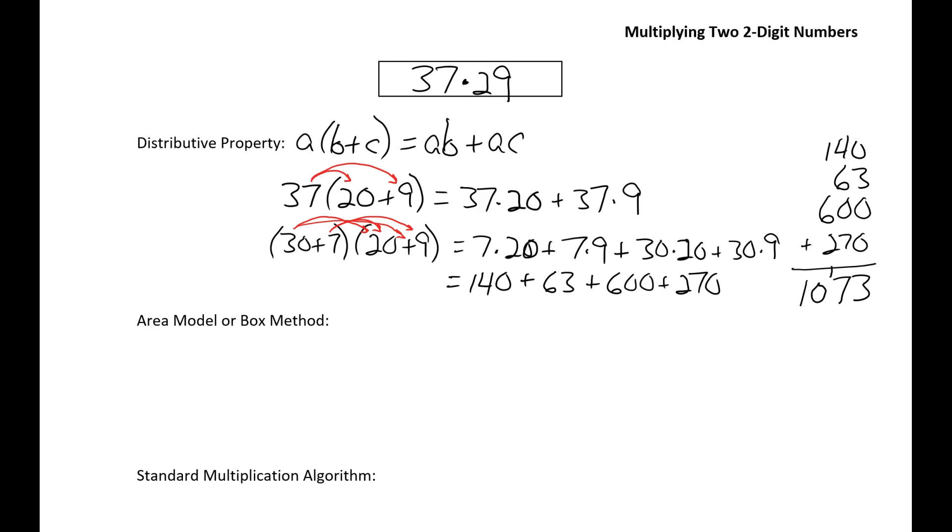So you may have also seen this type of problem written this way, with a box divided into four parts. And the 20 plus 9 on the top. And the 30 plus 7 written along the side. And then a multiplication symbol here in the corner. And then you multiply each pair of numbers, and you put the products in each of the four parts of the box.